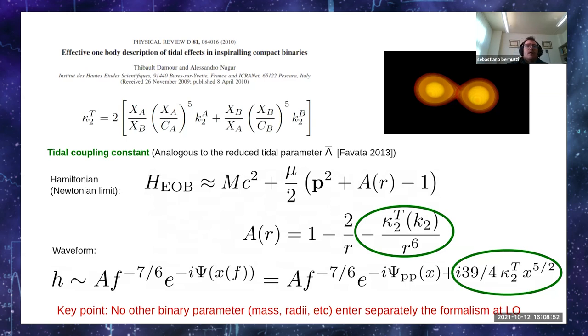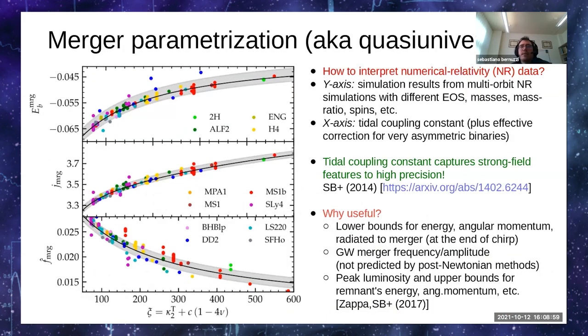The question is, how do I understand these numbers? How do I predict these quantities for cases I have not simulated? The answer turned out to be pretty simple: the tidal coupling constant predicted analytically already at Newtonian level captures very well and to high precision full numerical relativity results. This is shown here in this plot for quantities like the merger frequency or the binding energy.